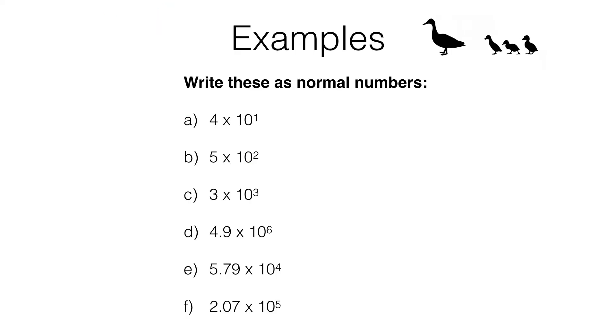Here are the examples. We have got six numbers given to us in standard form. They are all of the form a times 10 to the power of n, where n is an integer and a is at least 1 but less than 10. Now, as mentioned earlier in the video, you should be comfortable working with powers of 10 and also multiplying by powers of 10. What we have to do is write these as normal numbers or ordinary numbers.